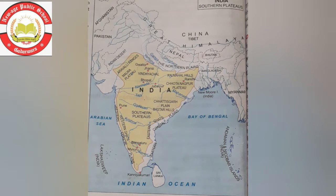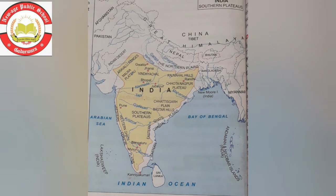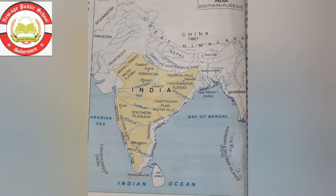The next states are Andhra Pradesh and Telangana. Their capital is Hyderabad. Bidriware work on copper and brass is famous in Andhra Pradesh. Kuchipudi is the famous dance style. Andhra Pradesh is first in rice production. Pongal and Ugadi are the main festivals. Tourist places include Salarjung Museum, Golconda Fort, Tirupati Temple in Andhra Pradesh, Charminar and Hussain Sagar Lake in Hyderabad.